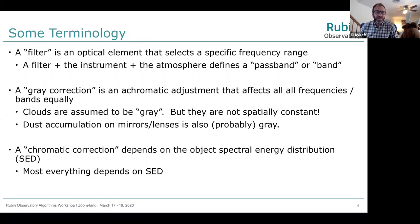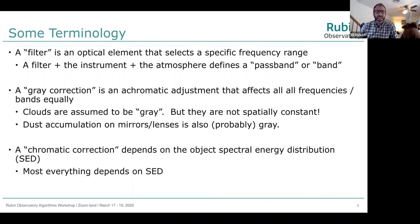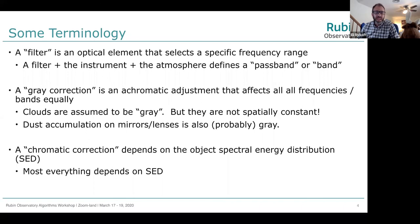I want to define some terminology before continuing. A filter is an optical element that selects a specific frequency or wavelength range. A filter plus the instrument plus the atmosphere defines a passband or band. A gray correction is an achromatic adjustment that affects all frequencies and bands equally — we assume clouds are gray, but they are not spatially constant. Dust accumulation on mirrors and lenses is also probably gray. A chromatic correction, on the other hand, depends on the object SED — the spectral energy distribution — and most everything depends on SED at some level.